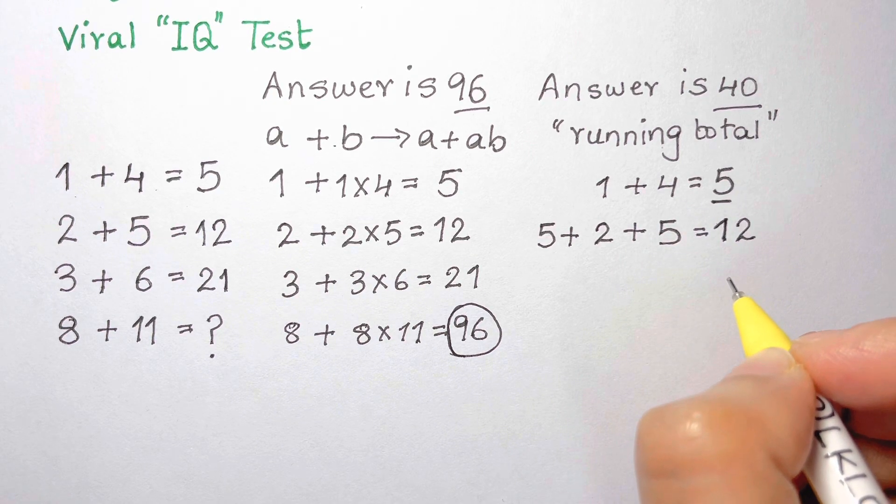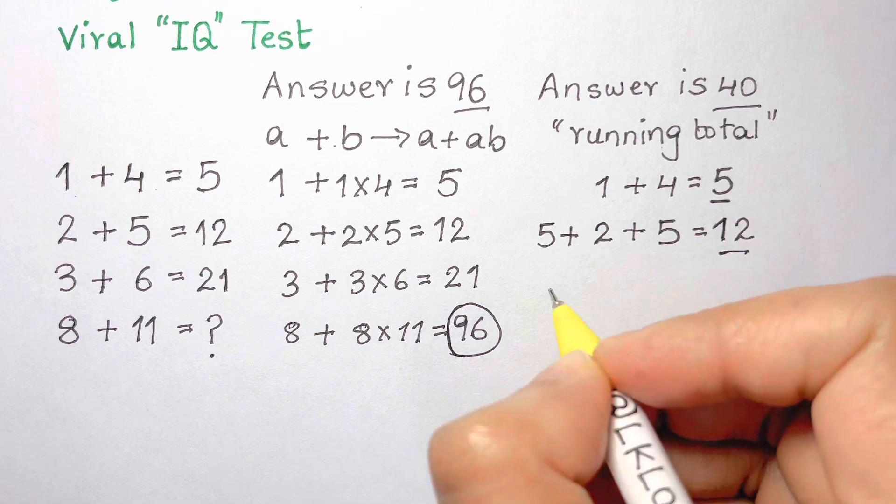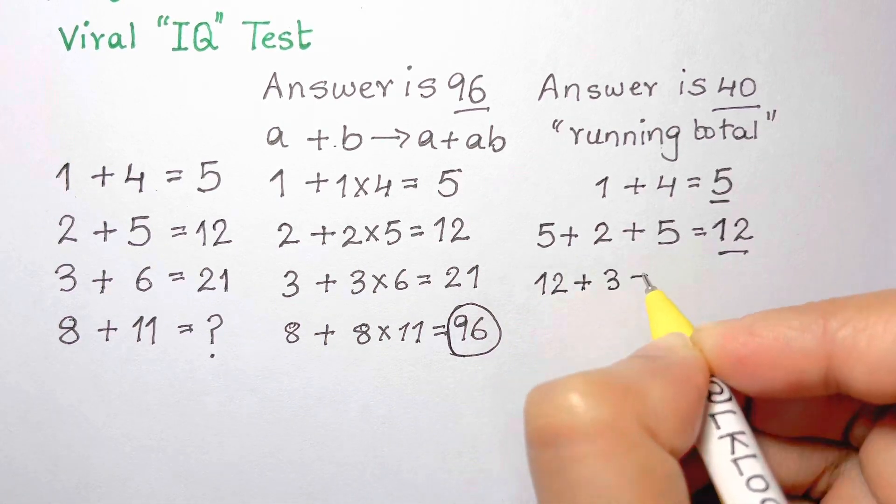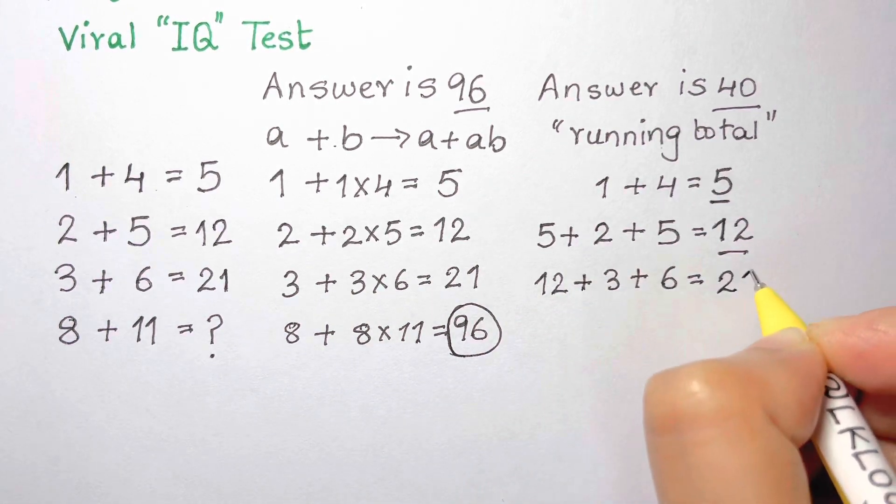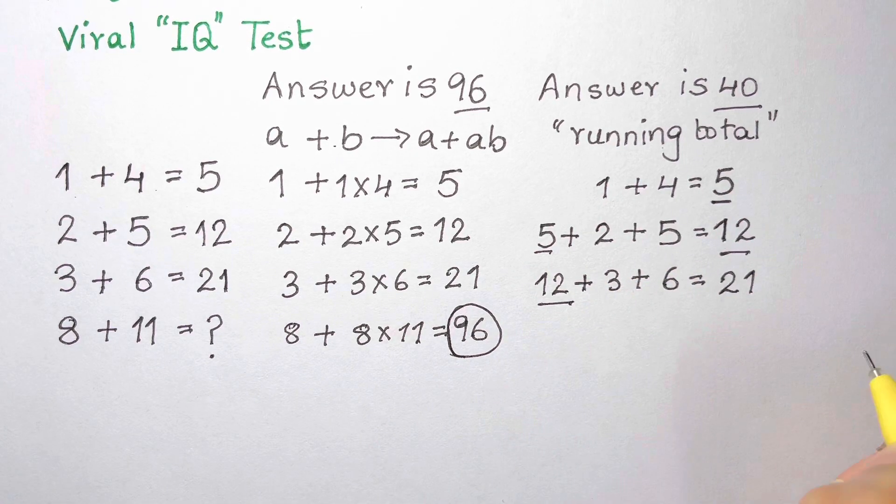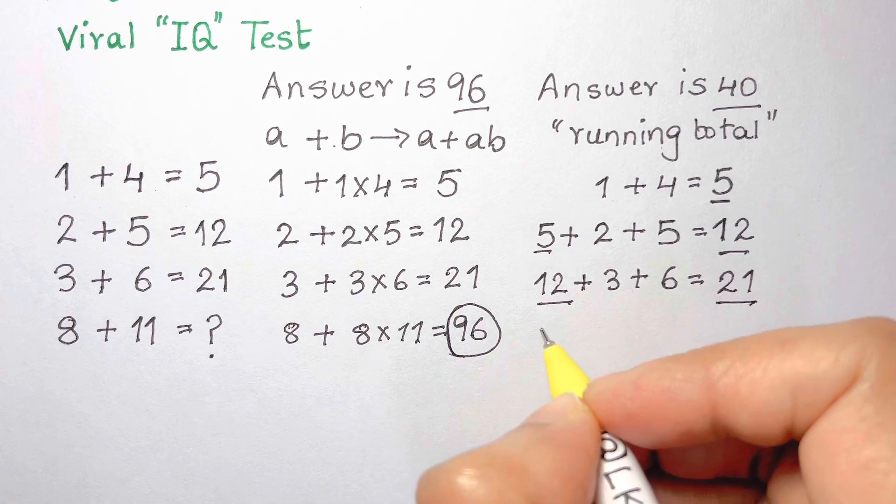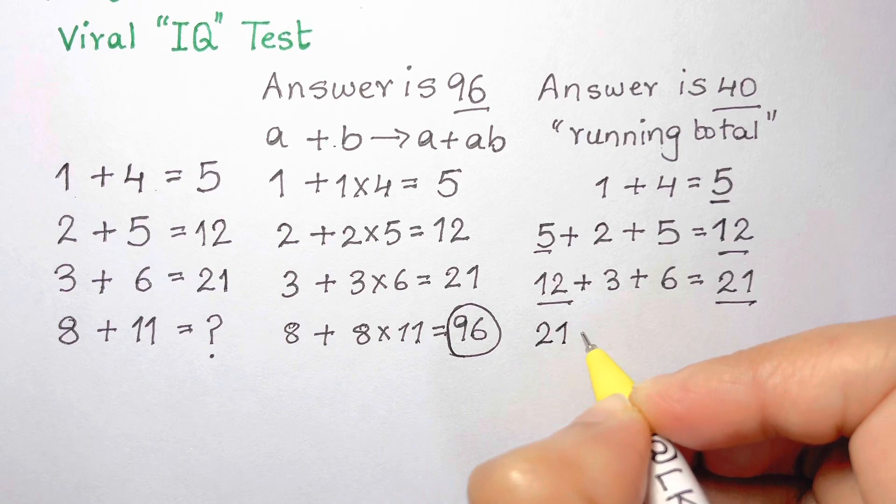We now add 12 to 3 plus 6 and that gets us to 21. This interpretation is consistent with the information that we are given. If we continue the pattern: